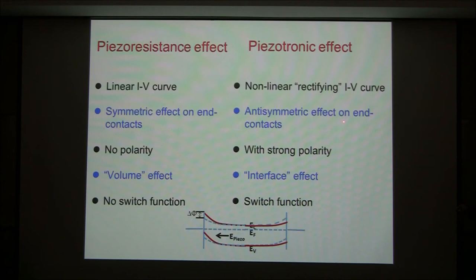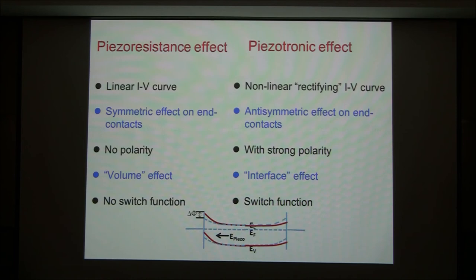The piezotronic effect is called asymmetric — it depends which way the positive or negative polar charge is directed. This asymmetric change means that if it's high on one side, it drops on the other. The piezo-resistive effect has no polarity; the piezotronic effect has a strong polarity. The piezo-resistive effect is a volume effect; the piezotronic effect is an interface effect. The piezo-resistive effect cannot be a switch — it can only be a sensor. The piezotronic effect can be a switch. If it can be a switch, you can do logic computation and build circuits.